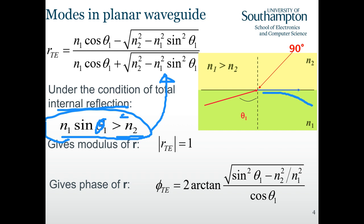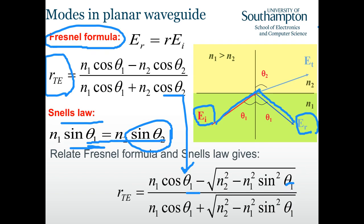The waves E_i and E_r are both complex values because there is an optical phase. The relationship between E_r and E_i involves a TE polarization factor. This means whenever we have a reflection, in addition to the direction change, we also impose a phase change to the optical phase. The optical phase is independent of the directional phase.